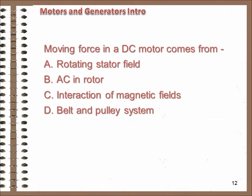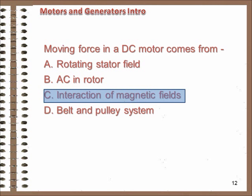Okay, a quick review. In a DC motor, where does the force to move the rotating parts come from? It's C, right? The field around the rotor is alternately attracted to, and repulsed by, the field poles of the motor.